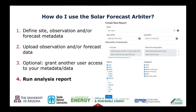Now that you have the right data uploaded to the arbiter and perhaps someone has shared some data with you, you're going to navigate over to the report creation form and set up the evaluation scenario. First, you provide a name and the start time and the end time. Then you select the observations and forecasts to compare. These can be the metadata and data you uploaded in steps one and two, or they can be the framework-supplied reference data or forecasts. If necessary, observation data will be resampled to match the forecast intervals. We never resample forecast data.